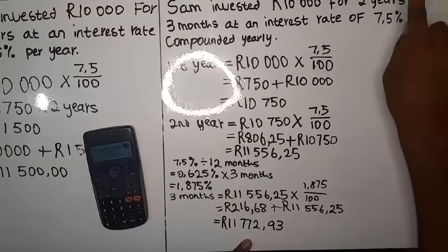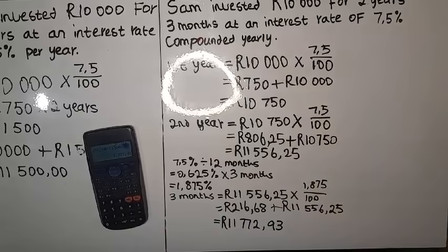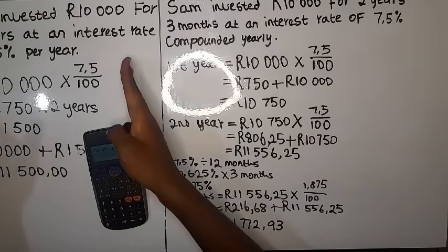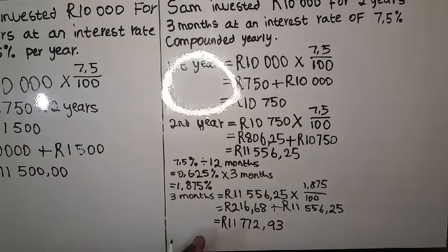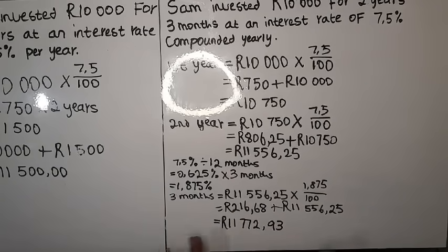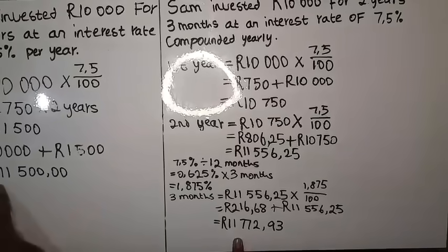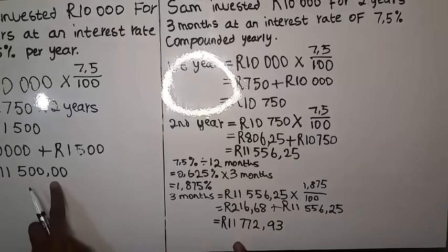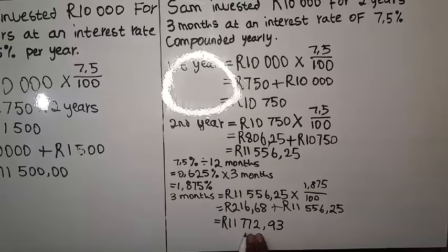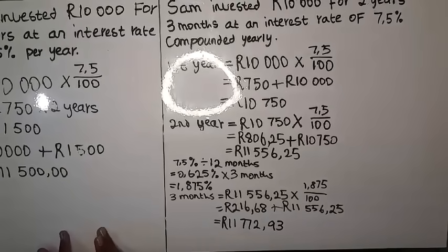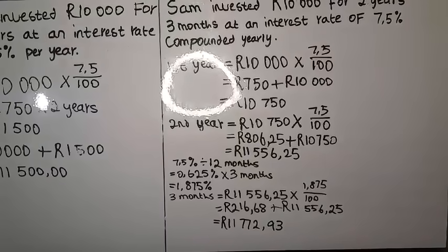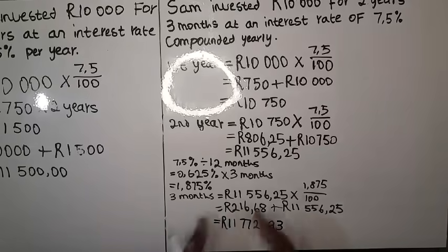That is how we calculate compound interest, and this is how we calculate simple interest. If they ask you which is the best option: compare the final answers. Simple interest gives 11,500, while compound interest gives 11,772.93 — which is more. So compound interest is the best way to invest your money. Thank you very much for watching. Please subscribe and like the video, and remember to study smart, not hard.